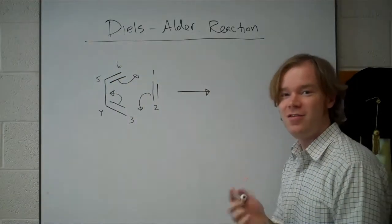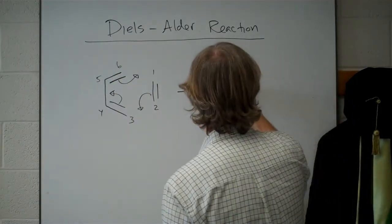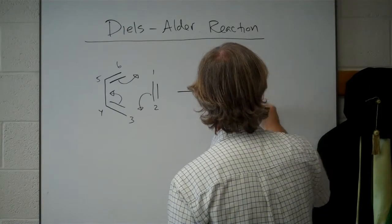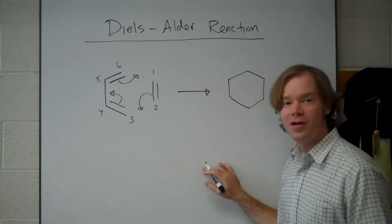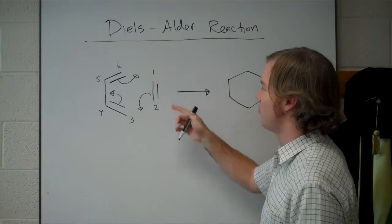What you get in the end is a new six-membered ring, where by the numbers we can make sense of it.